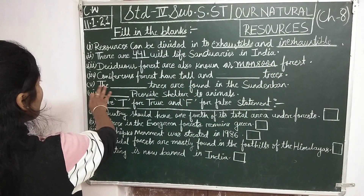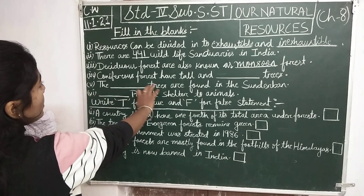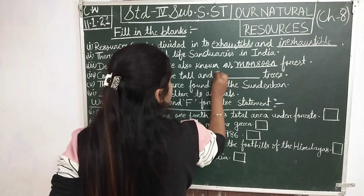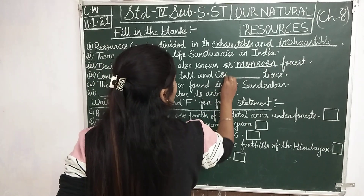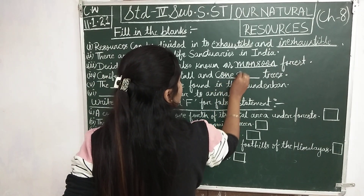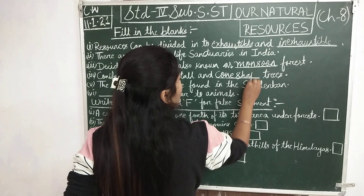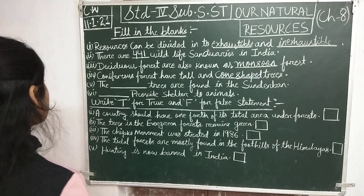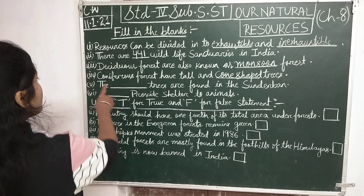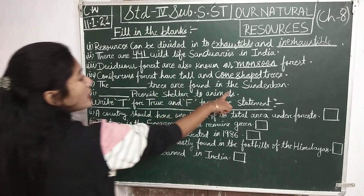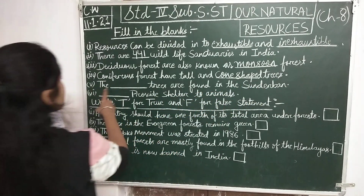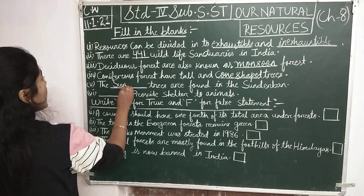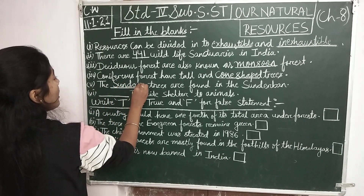Number 4: coniferous forests have tall and cone-shaped trees. Cone-shaped is spelled C-O-N-E-S-H-A-P-E-D. Number 5: the Sundari trees are found in the Sundarbans. Sundari is spelled S-U-N-D-A-R-I.